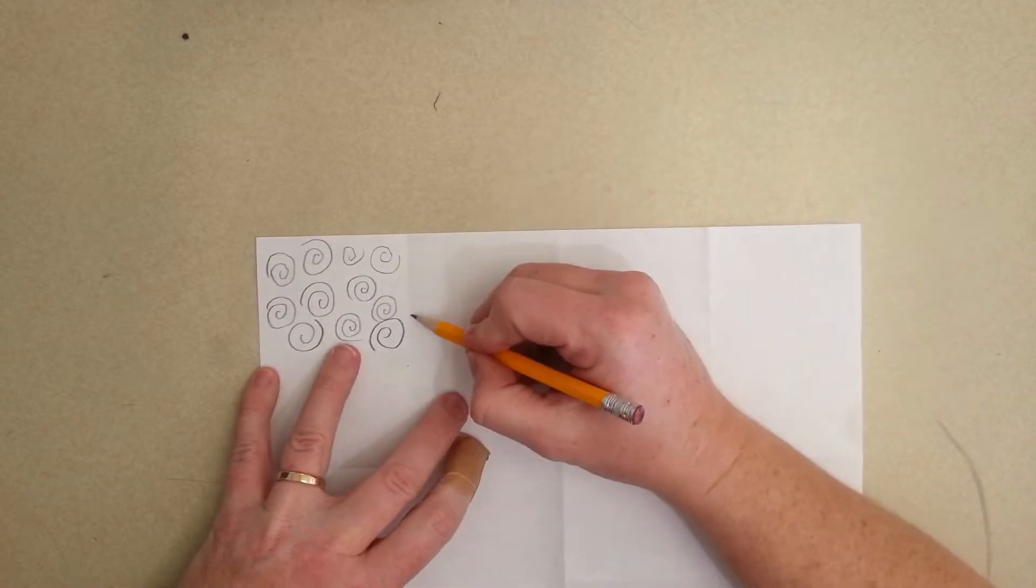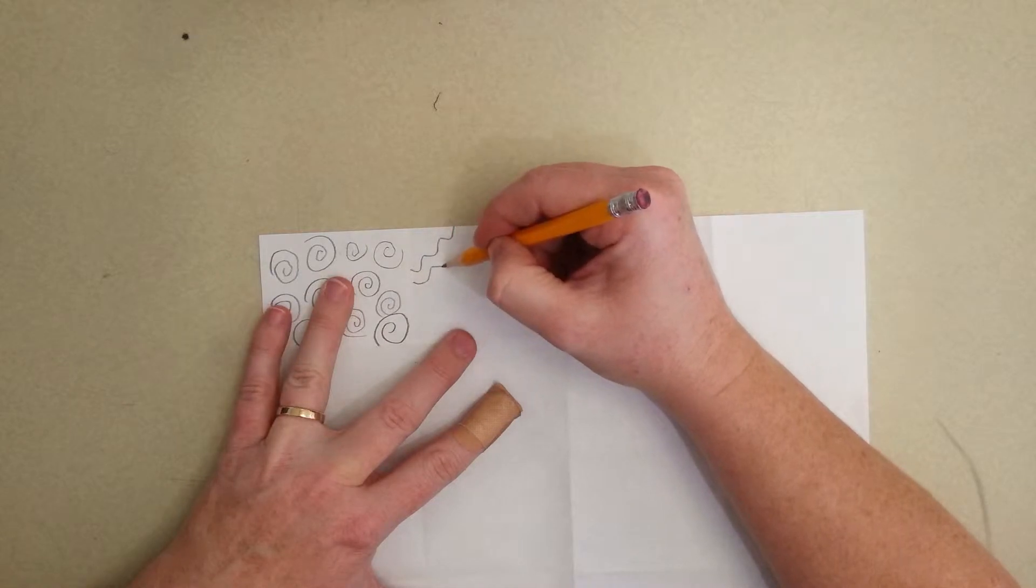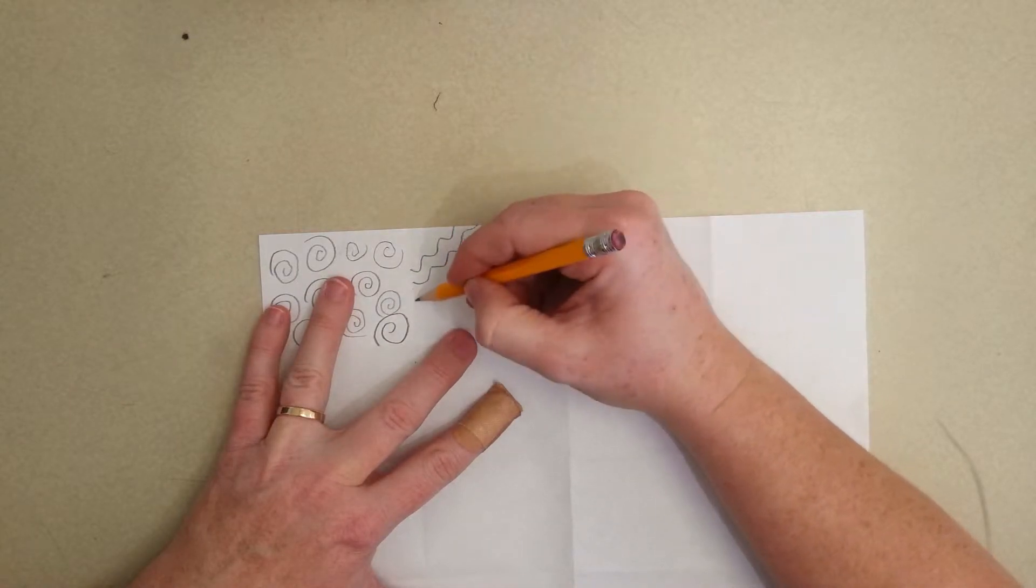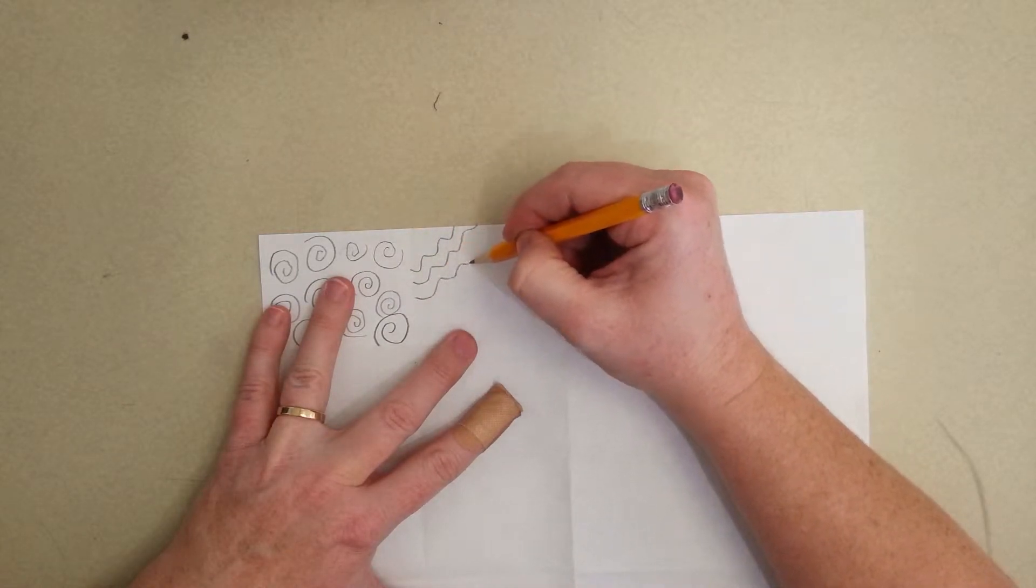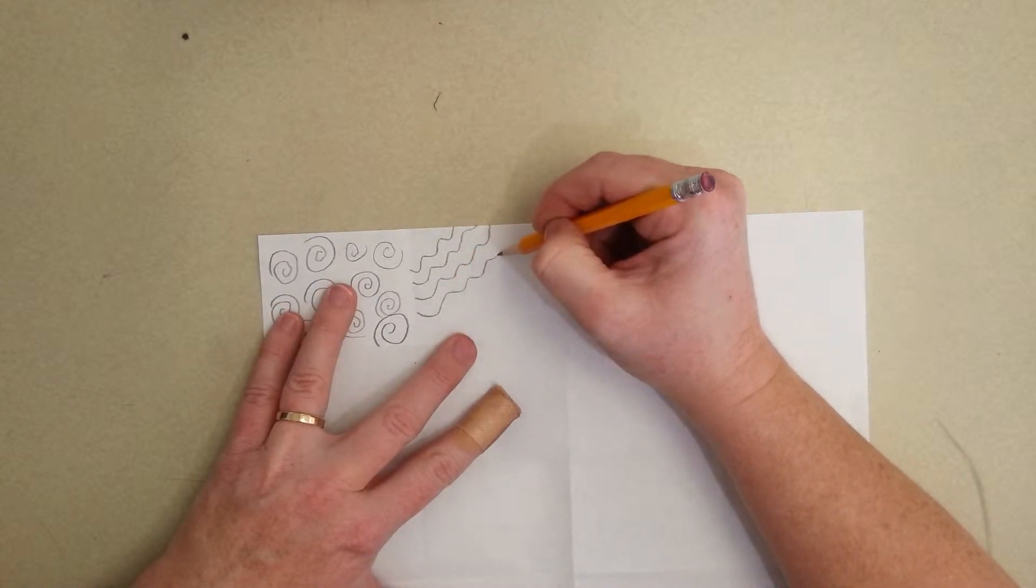And then this one, I'm going to do wavy lines. And I want you to notice that I'm deliberately paying attention to what my pencil is doing. I'm not just scribbling randomly. I'm controlling my pencil.